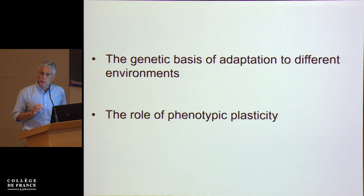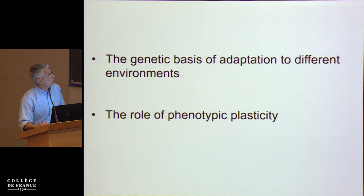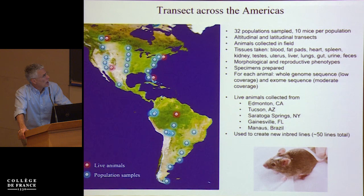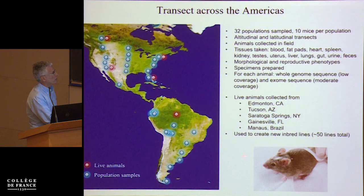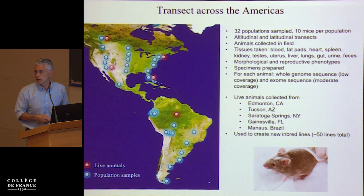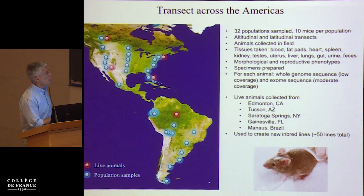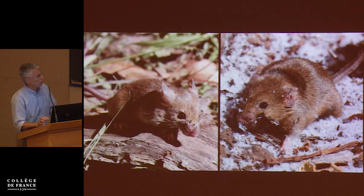We were interested in the possibility of finding genes of fairly large effect that explain more polygenic traits. First I'm going to talk about the genetics — published work — and then briefly touch on the role of phenotypic plasticity. We've conducted a transect of house mice across North and South America: 10 mice sampled per population, two transects of elevation in the Andes from sea level to over 3,000 meters. The blue dots are places where we've sampled mice and measured phenotypes on wild-caught individuals and sequenced exomes and whole genomes. The red dots are places where we've sampled live animals, brought them back to the lab, and established new wild-derived inbred lines.